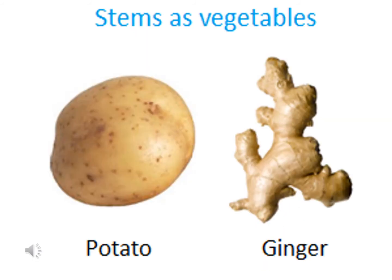Some of the stems that we eat: here we can see potato and ginger. They are called the underground stem. We also eat some other stems like lotus stem, turmeric, etc.